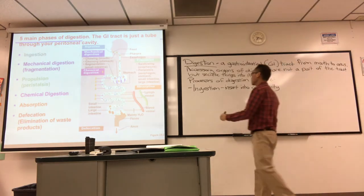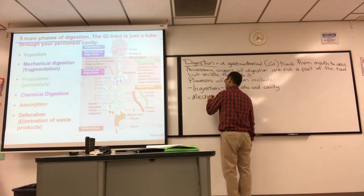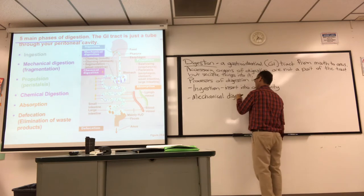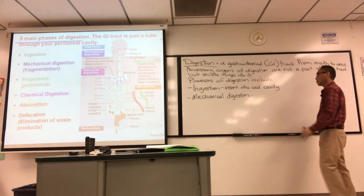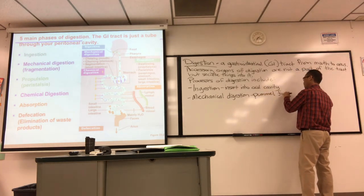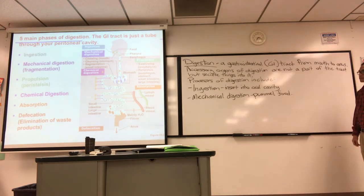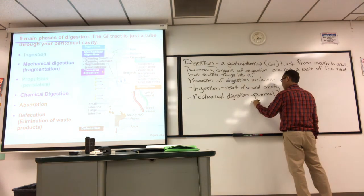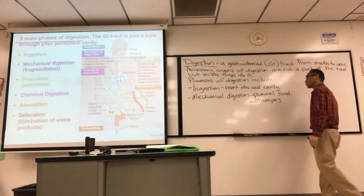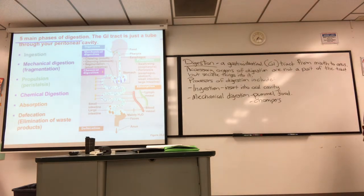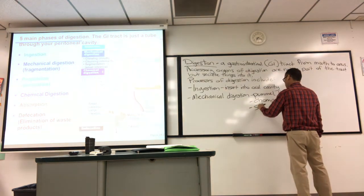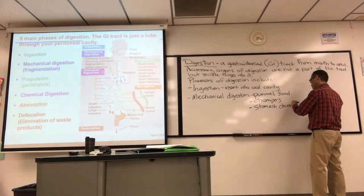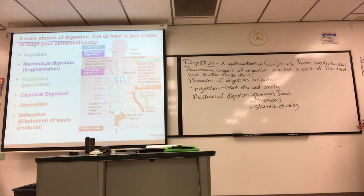Mechanical digestion, or fragmentation, is simply pummeling the food — just breaking it apart into smaller pieces. A large part of this is accomplished by the teeth, the chompers. Also, the stomach churning gives the food a lively pummeling. So the mouth and stomach accomplish most of the mechanical digestion.